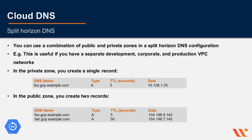You can use a combination of public and private zones in what's called a split-horizon DNS configuration. This is useful if you have separate dev, corporate, and production VPC networks. In the private zone you create a single record for foo.gcp.example.com pointing to a certain IP address, and in the public zone you create records for foo and bar with separate IP addresses. A query for foo.gcp.example.com from a VM in your VPC network returns 10.128.1.35, while a query for foo.gcp.example.com from the internet returns a different IP address, 104.198.6.142.